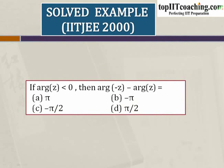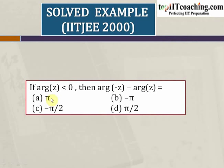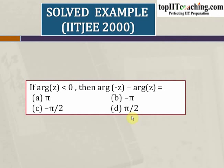Let's solve an IIT problem that appeared in 2000, which is based on the concept of argument of complex numbers. This problem says: if argument of z is less than 0, then the argument of minus z minus argument of z is equal to — option a is π, option b is minus π, option c is minus π by 2, and option d is π by 2. Here we have to find out the value of argument of minus z minus argument of z, given that the argument of z is less than 0.